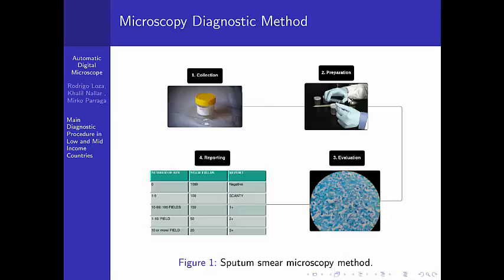So I made this diagram that you can see over here. It has four pictures which describe the four stages of the diagnostic method. Let's start describing the first stage, which is the collection stage. There are two main things that should be done in this stage. First, we have the collection of the samples, which determines a variable named the quality of the sample.